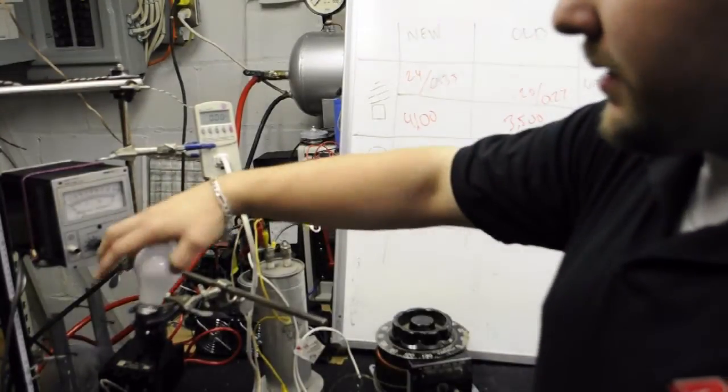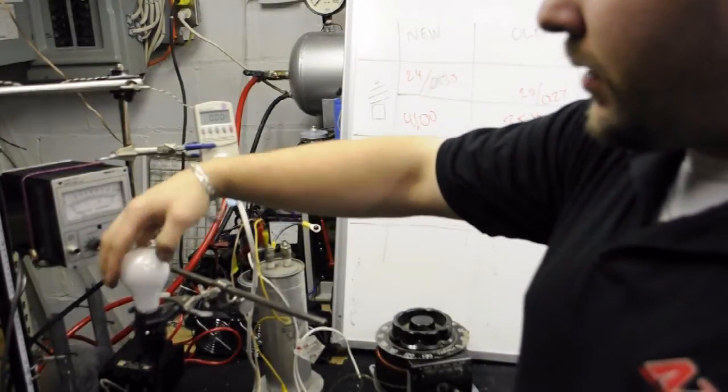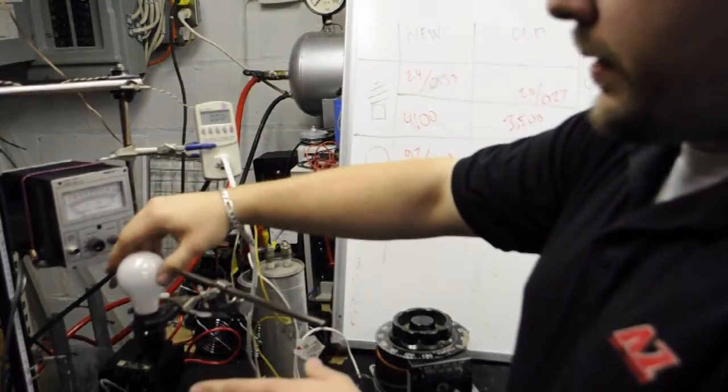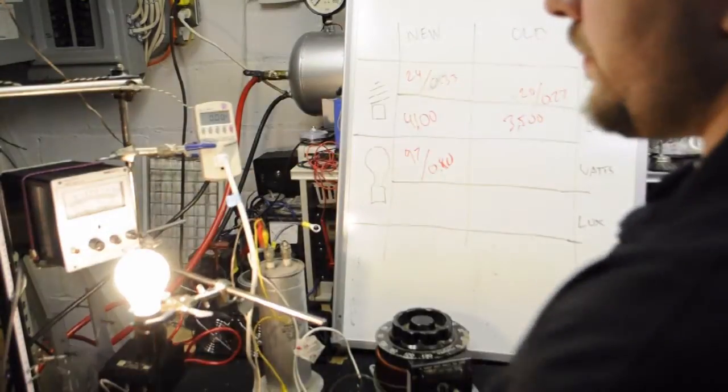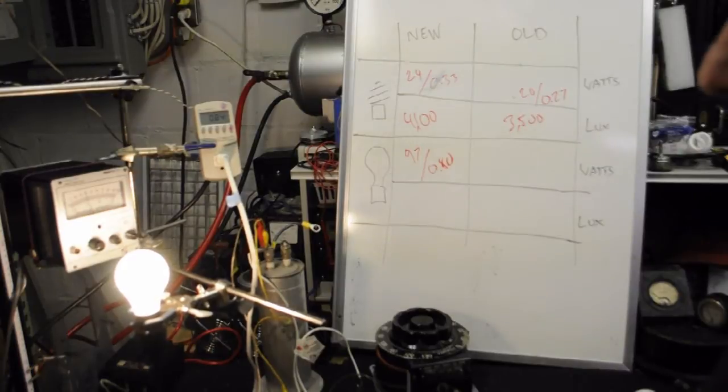I'm now going to put in the old incandescent bulb. Also too, these are all 100 watts and they're all soft white. And this guy is sitting at 3,800 lux.